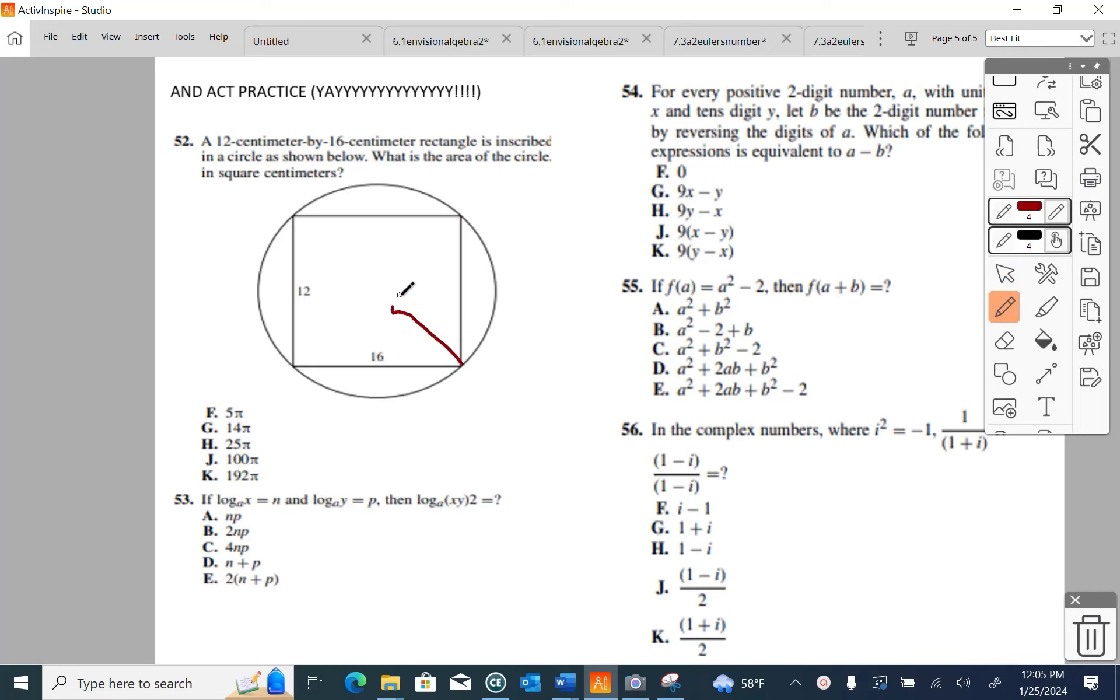We're going to draw in the diameter of the circle and find this length by doing A squared plus B squared equals C squared. There's a lot of geometry on the ACT. If we take 12 squared, we get 144. We take 16 squared, we get 256. We put them together, we get 400. And if we take the square root, we get 20. So all the way across is 20, which means we have radiuses of 10.